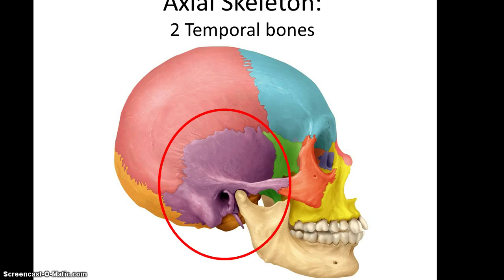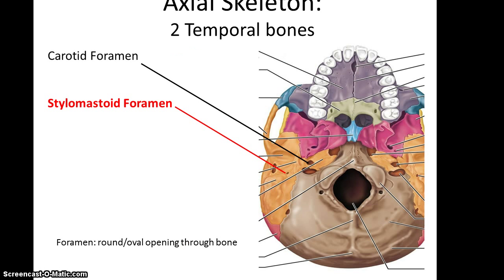We move on to the temporal bone. There are two of them, one on each side. If you look at the bottom of the skull, you see that the temporal bone has two important foramen: the carotid foramen, where the carotid artery will go through, and the stylomastoid foramen.